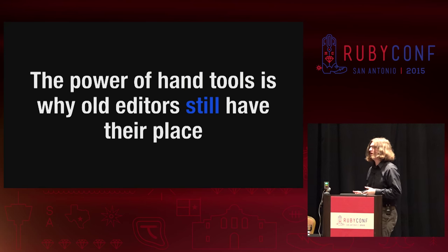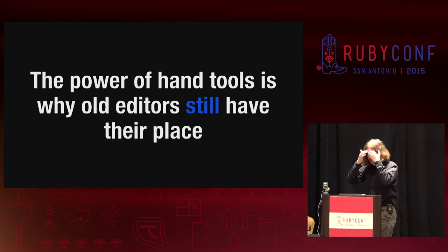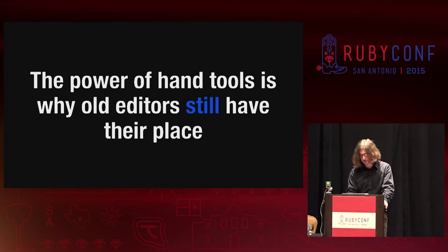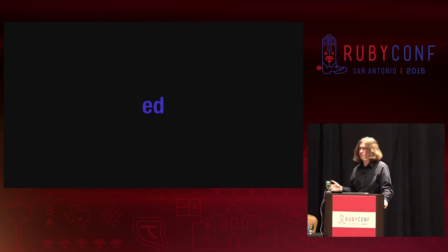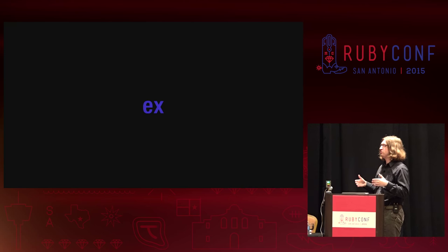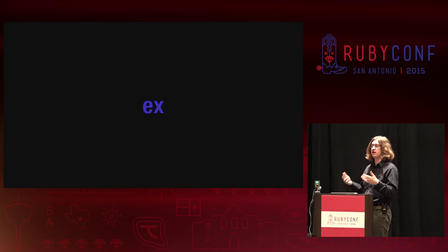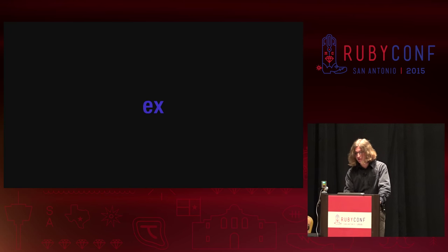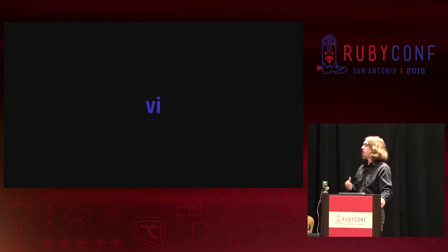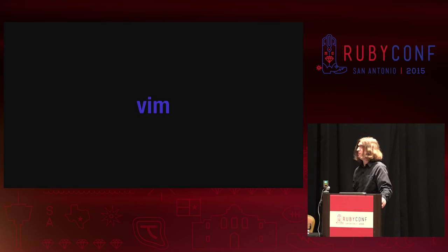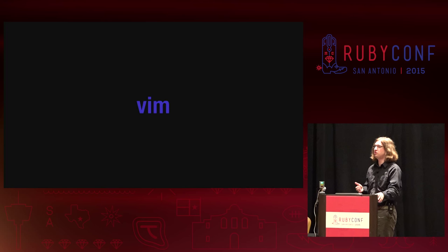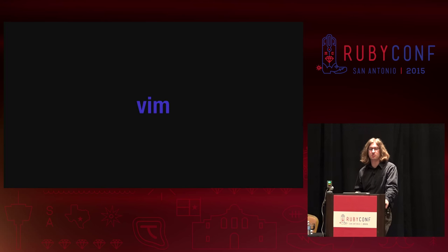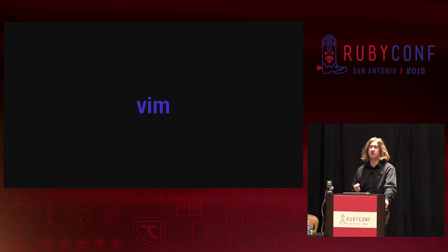Hand tools have kind of gone by the wayside in terms of editor creation today, which is why older text editors still have a place in today's programming. Ed eventually was expanded upon and became Ex. Eventually someone created a completely visual mode that didn't work in a purely command line way — it actually repainted the entire screen every time you did something — and this visual mode of Ex was called Vi. Eventually someone wanted to improve this, and so they created Vim. Vim is a great text editor, still being developed today and fantastically powerful. Even though it is really difficult to use, one reason we as programmers gravitate towards it is because it has that hand tool nature.